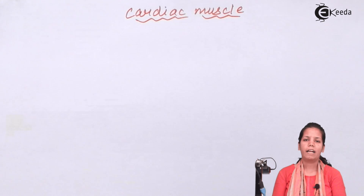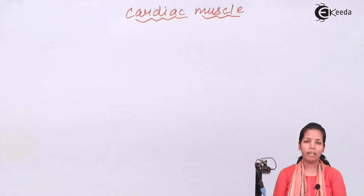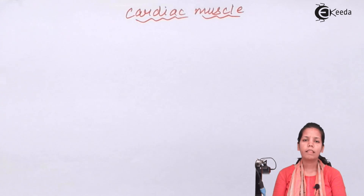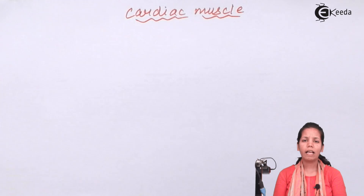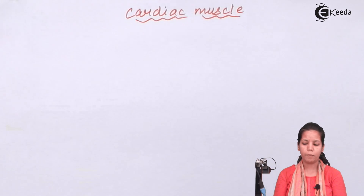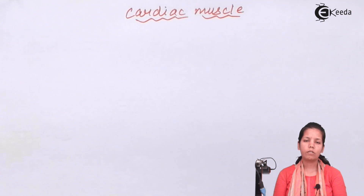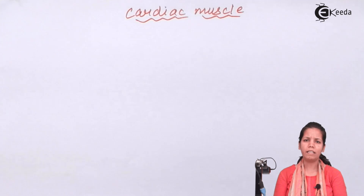When I talk about cardiac muscles, obviously they are related to your heart or myocardium — they are found in the heart region. They are elongated, cylindrical, and non-tapering towards the end. They consist of myofibrils, sarcomeres, and many nuclei structures.